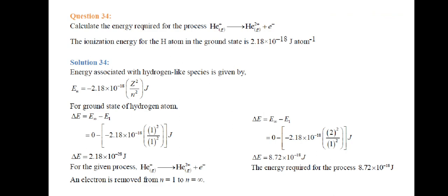Question 34: Calculate the energy required for the process He⁺ → He²⁺ + electron. The ionization energy of the H atom in the ground state is 2.18 × 10⁻¹⁸ joules per atom. So for He⁺ to He²⁺, the ionization energy of hydrogen in the ground state is 2.18 × 10⁻¹⁸ joules per atom.